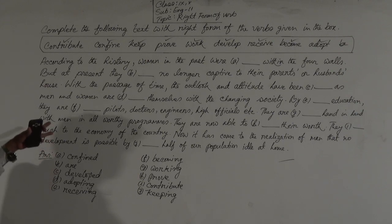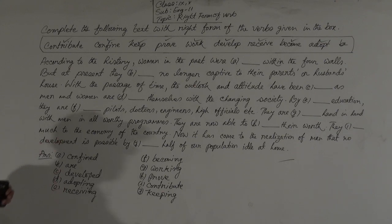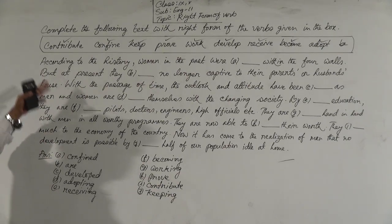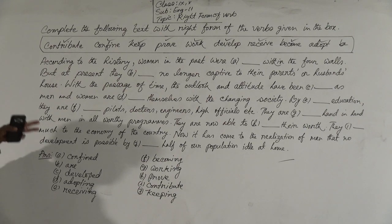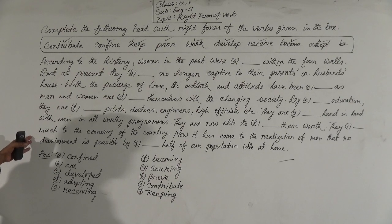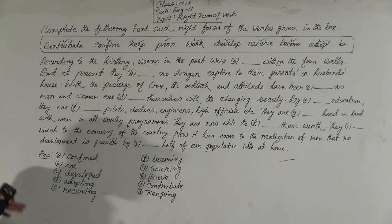We have now filled all 10 gaps. The answers are: A — confined, B — are, C — developed, D — adopting, E — receiving, F — becoming, G — working, H — prove, I — contribute or are contributing, J — keeping. You have to read and understand the context of the passage first, then you can use the correct right form of verb easily. Practice at home. That's all for today, thank you, all the best.